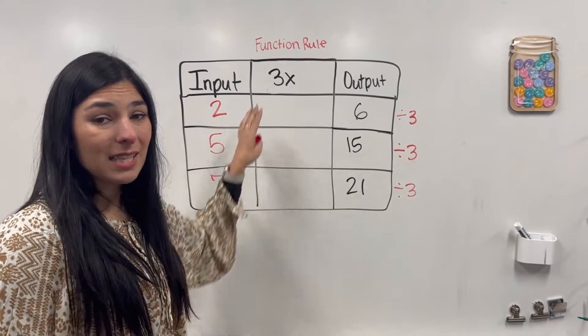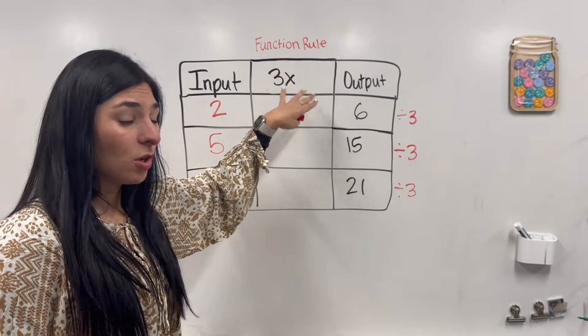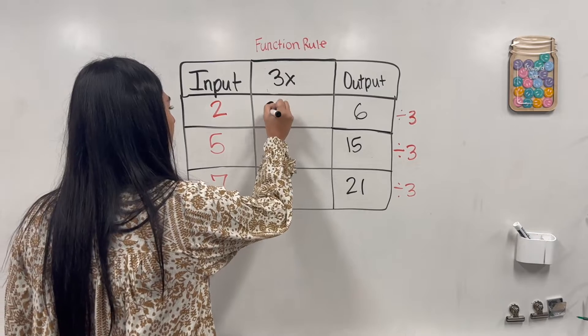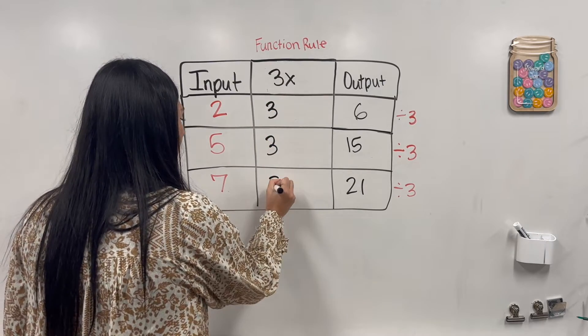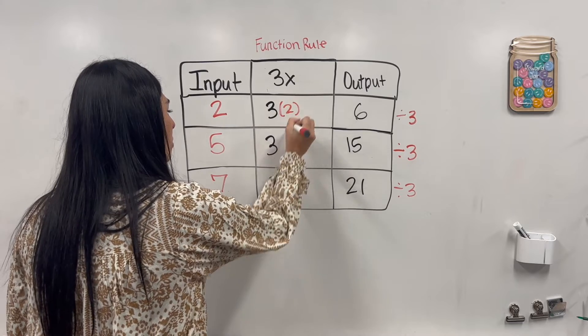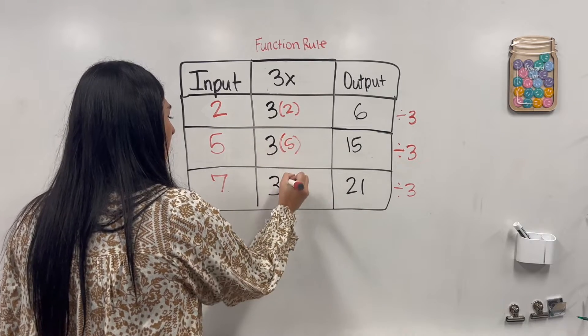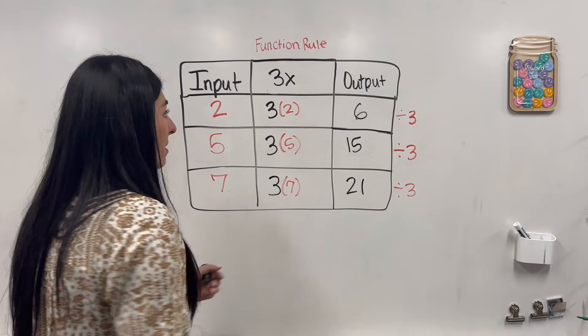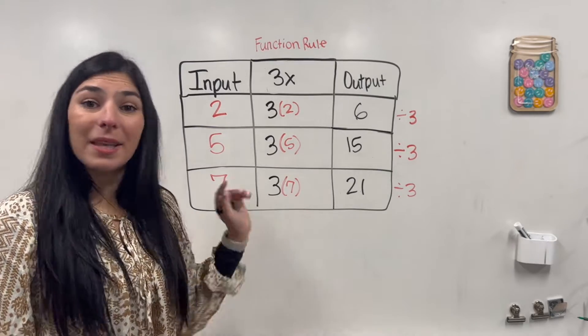Now I still need to plug these into my function rule. So I'm just going to plug them in. I have 3, 3, 3. We're multiplying. So times 2, times 5, times 7. Now our function table is complete.